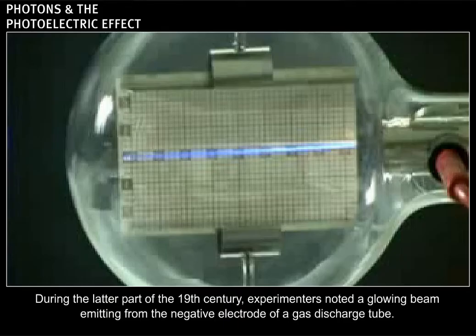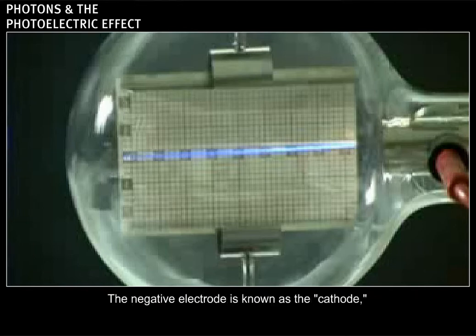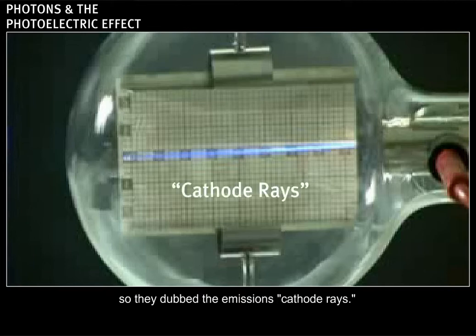During the latter part of the 19th century, experimenters noted a glowing beam emitting from the negative electrode of a gas discharge tube. The negative electrode is known as the cathode, so they dubbed the emissions cathode rays.